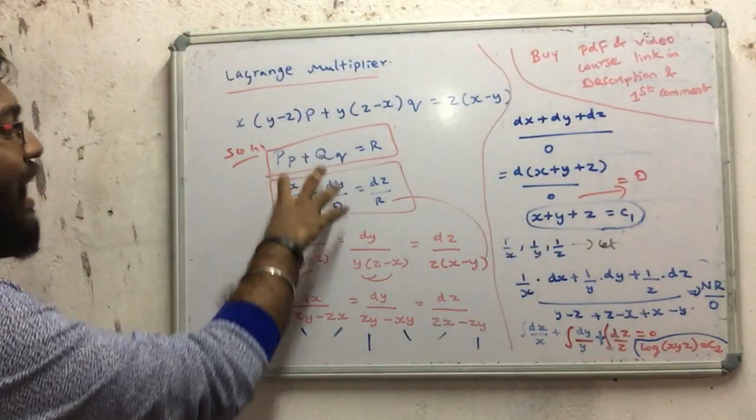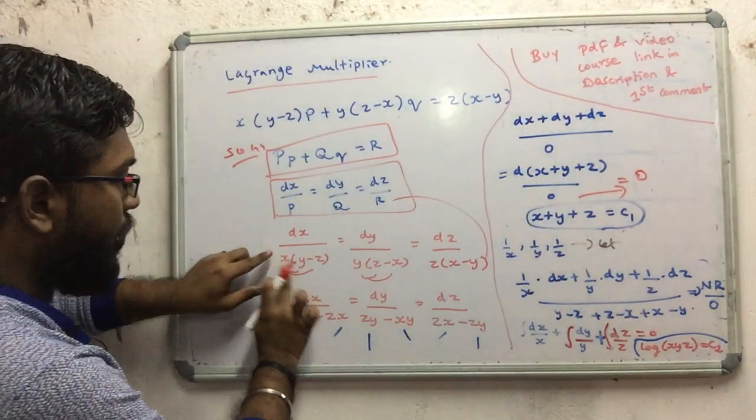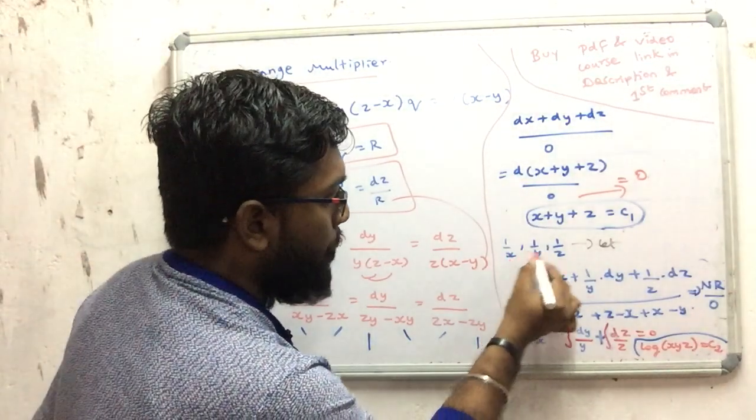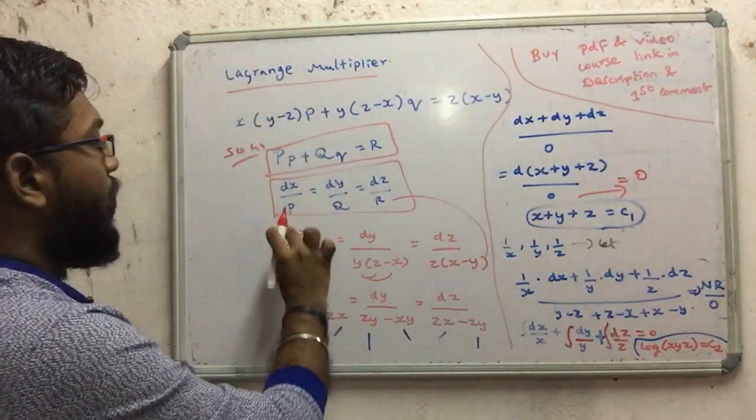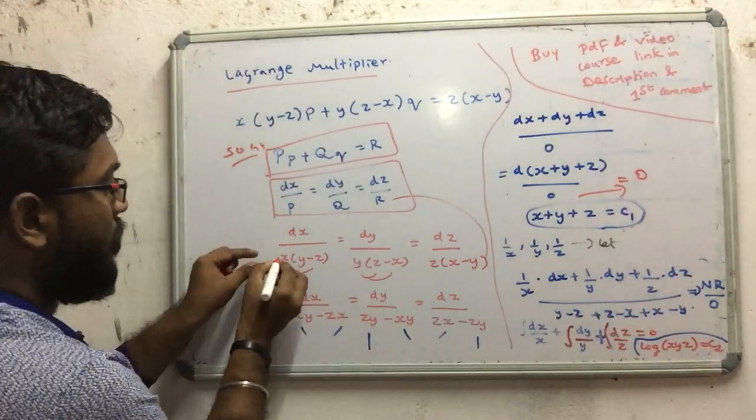Now, if you multiply it with 0, you can multiply it with 0. If you multiply with 1 by x, 1 by y, 1 by z, then you can multiply it with 1 by x.